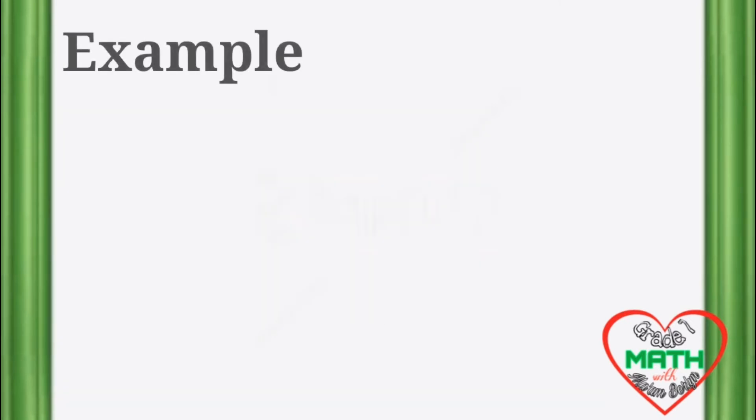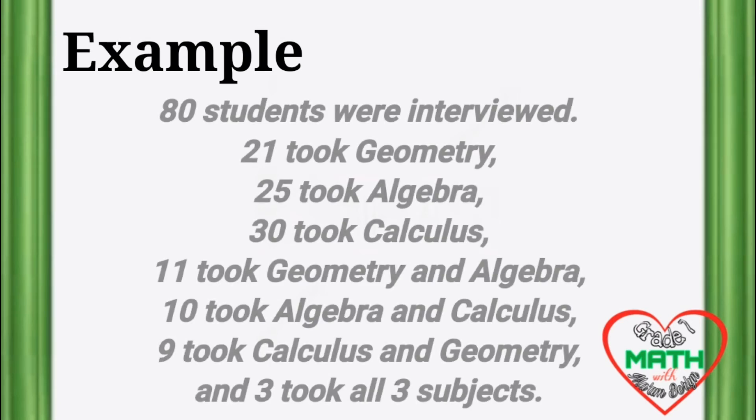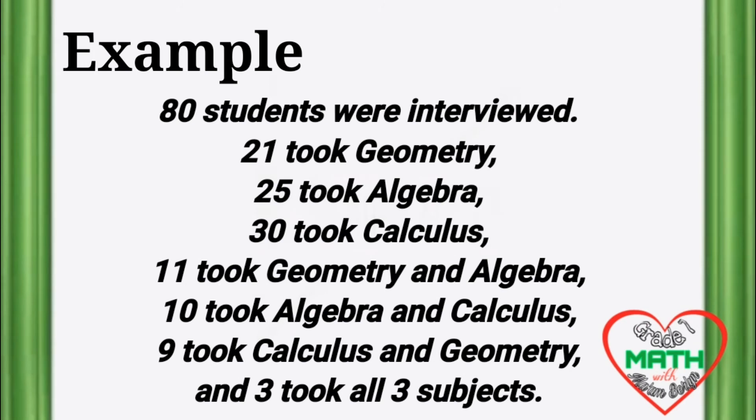Now let's have an example of a Venn diagram with 3 circles. 80 students were interviewed: 21 took geometry, 25 took algebra, 30 took calculus, 11 took geometry and algebra, 10 took algebra and calculus, 9 took calculus and geometry, and 3 took all three subjects.